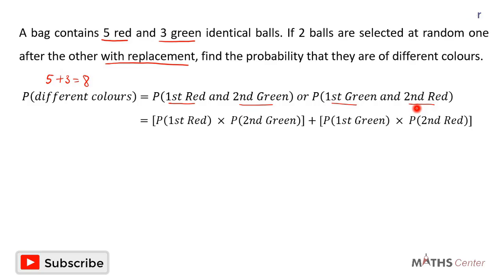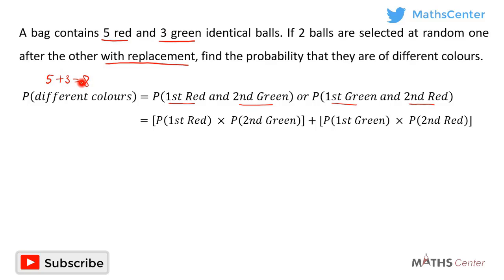The probability that the two balls selected are of different colors equals the probability that the first is red and the second is green, plus the probability that the first is green and the second is red. The probability that the first ball is red is five divided by eight, since there are five red balls out of eight total.